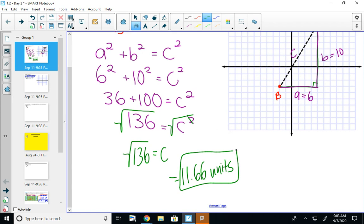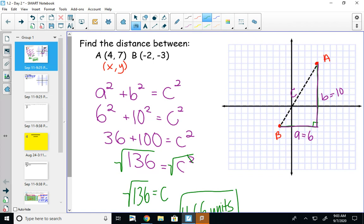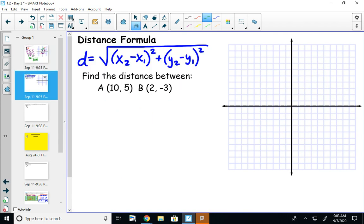So one way you can find the distance between two points is by drawing out a graph and using the Pythagorean theorem. If you don't want to draw out a graph, we also have a formula for distance. This is the distance formula. It's the square root of (x2 - x1) squared plus (y2 - y1) squared. That is basically what we just did.